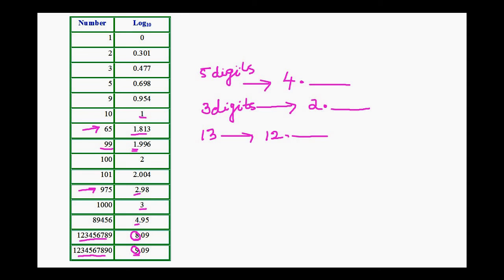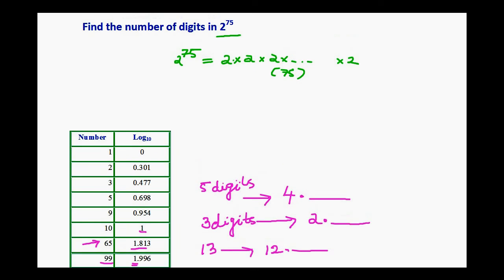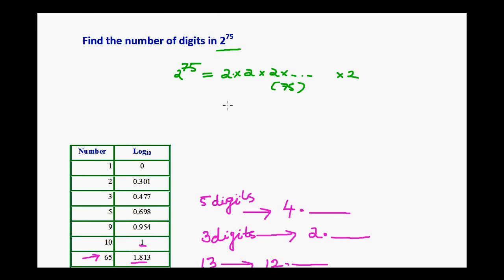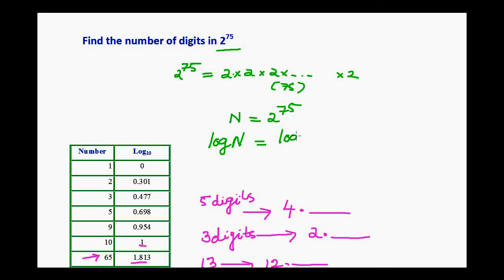Now, our question is 2 power 75. Let n equal to 2 power 75. Taking logarithm on both sides, we get log n equal to logarithm of 2 power 75.